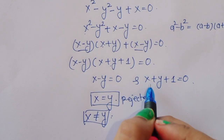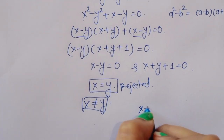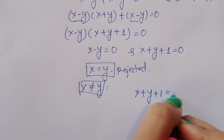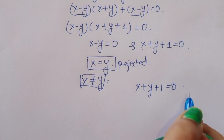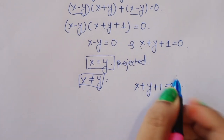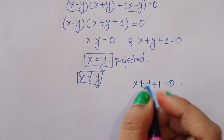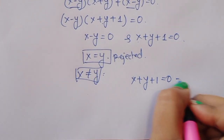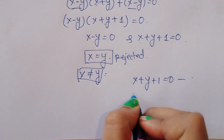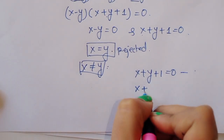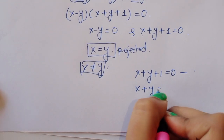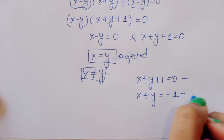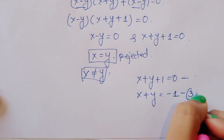The next factor gives x plus y plus 1 equals 0, which we call equation 3. Or equivalently, x plus y equals minus 1. This is equation 3.